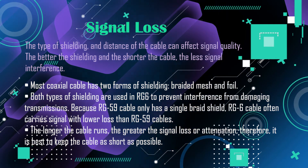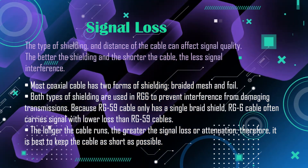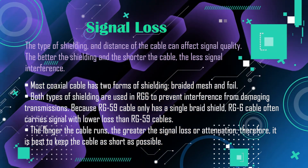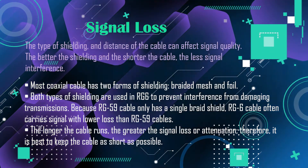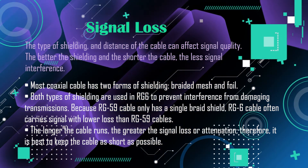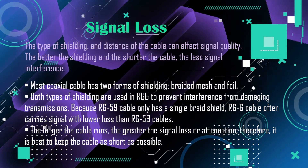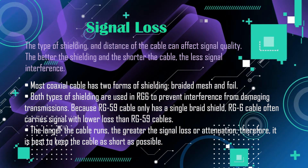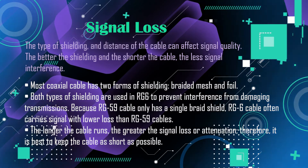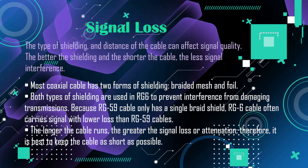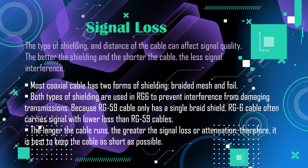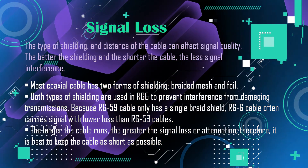Because RG59 cable only has a single braid shield, RG6 cable often carries signal with lower loss than RG59 cables. The longer the cable runs, the greater the signal loss or attenuation. Therefore, it is best to keep the cable as short as possible.